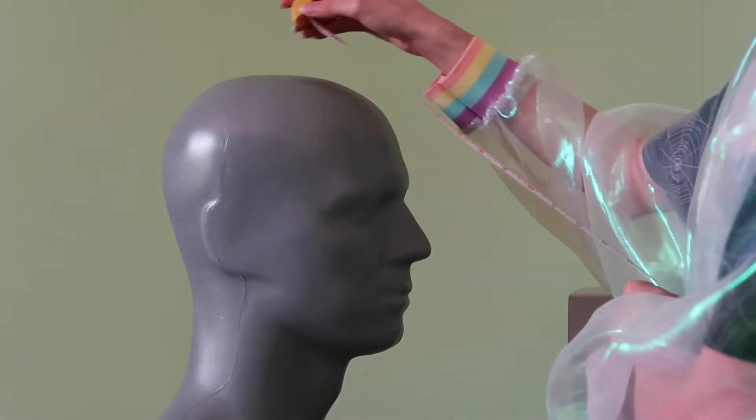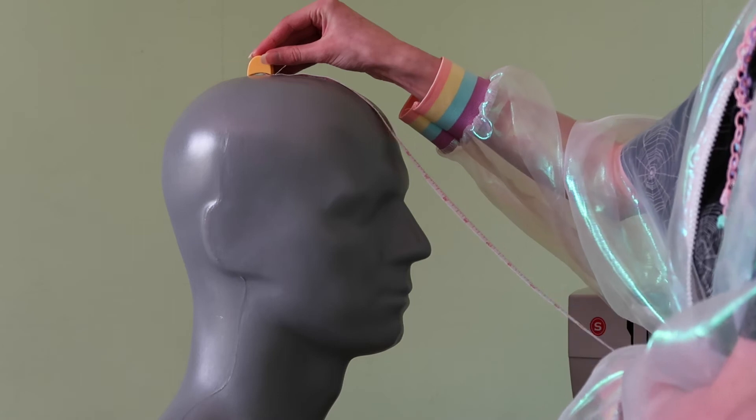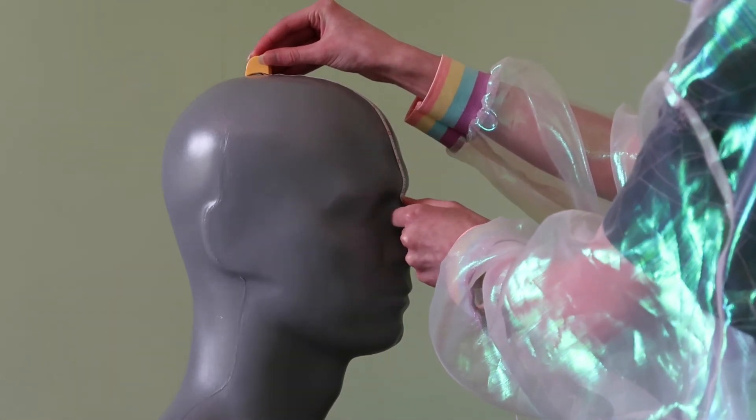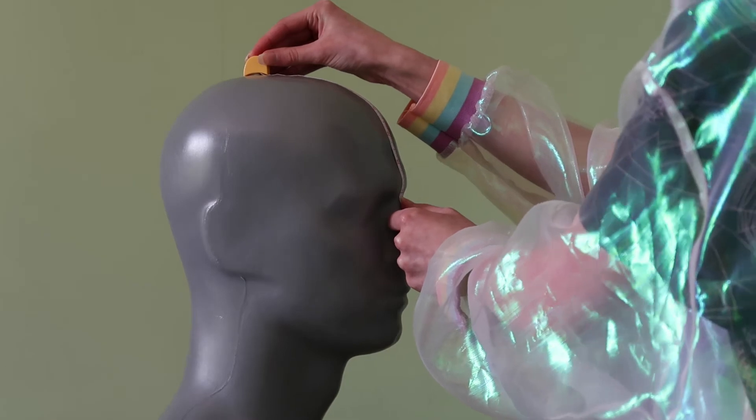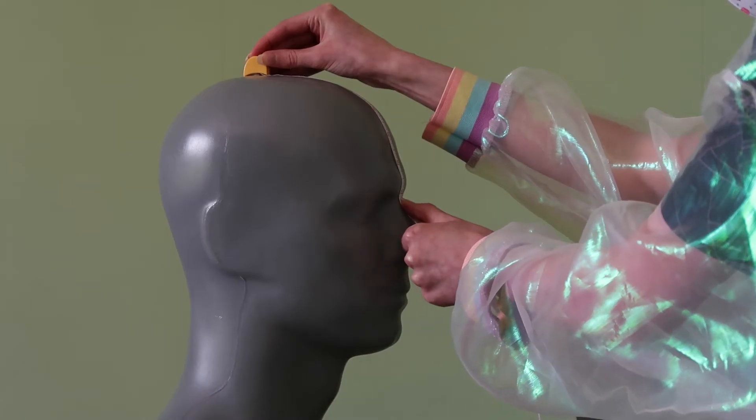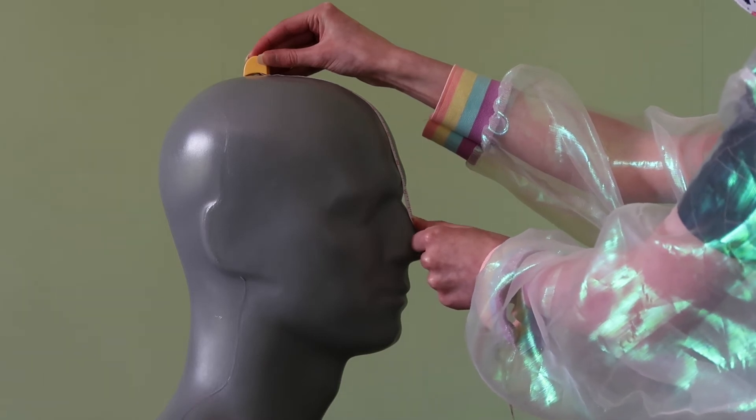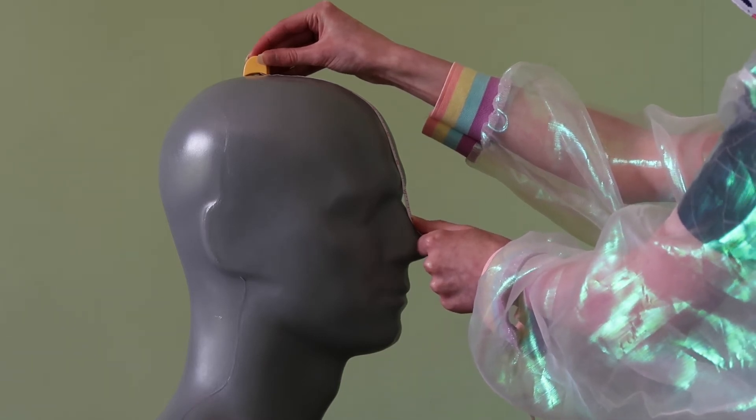We take the tape measure and put it at the top center of the head, then run it down to between the eyes. On this mannequin it's 7 inches. Then we run the tape measure down to the bridge of the nose, which is about 7 and 3 quarter inches.